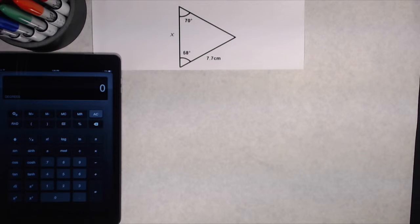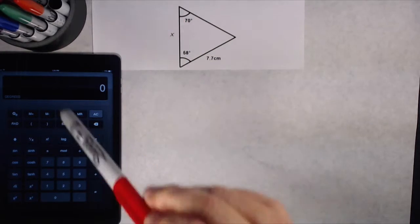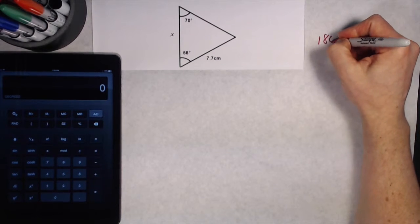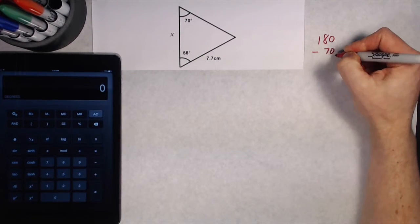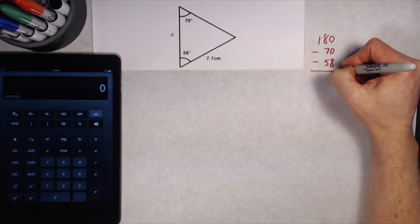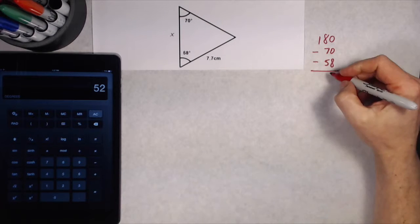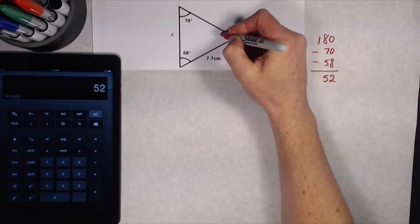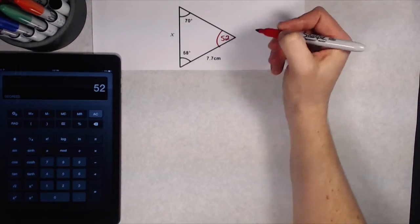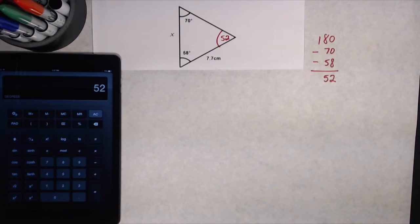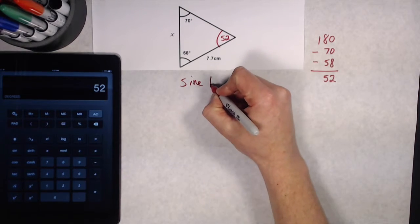All right, here's a question where I've got a missing side length in a non-right angle triangle. I know this is a non-right triangle because I don't see that square in any of the angles. And if I wasn't sure, I could just take 180, subtract 70, subtract 58, and figure out what that missing angle is. That's 52 degrees. Just confirming for me that this angle is not 90 either. Now that I know it's a non-right triangle and I'm looking for a missing side length, I know that I can use the sine law.